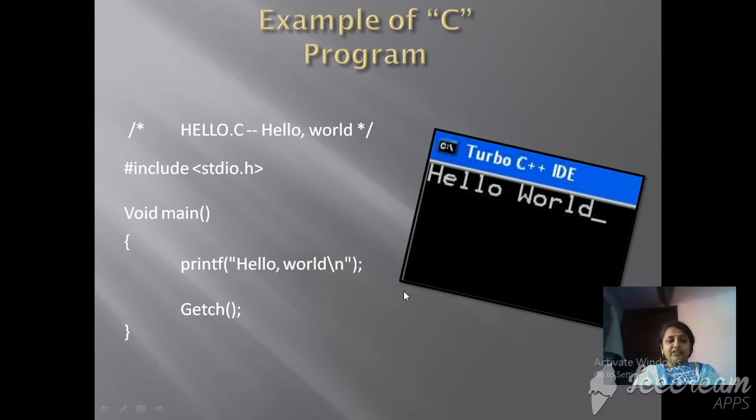Before that header file, the hello.C is nothing but a program name with the extension dot C. The symbols like backslash and star indicate it is the comment line. Comment line indicates that the C compiler cannot call that particular line of program because it is a comment line. It gives just an instruction to the programmer.